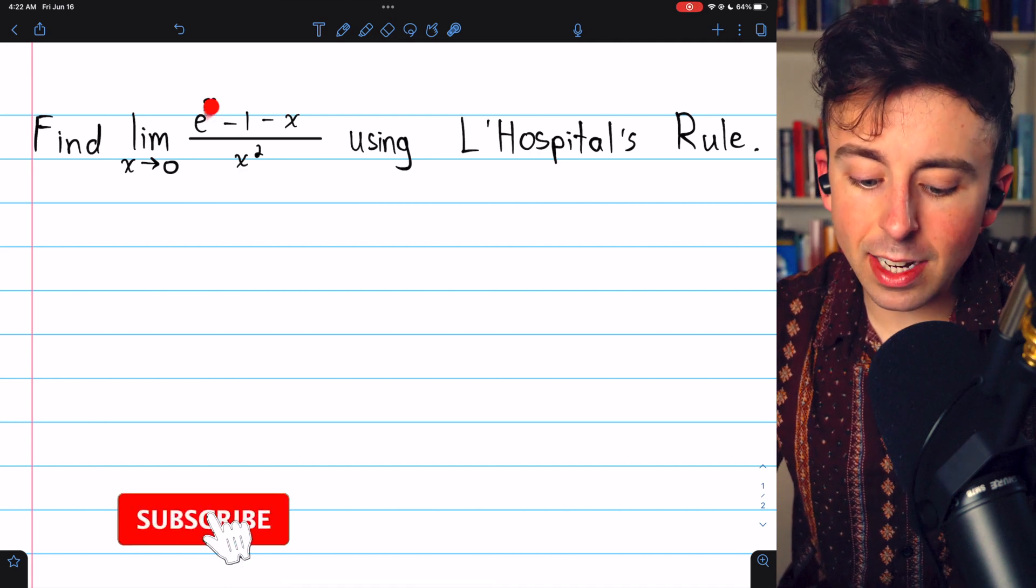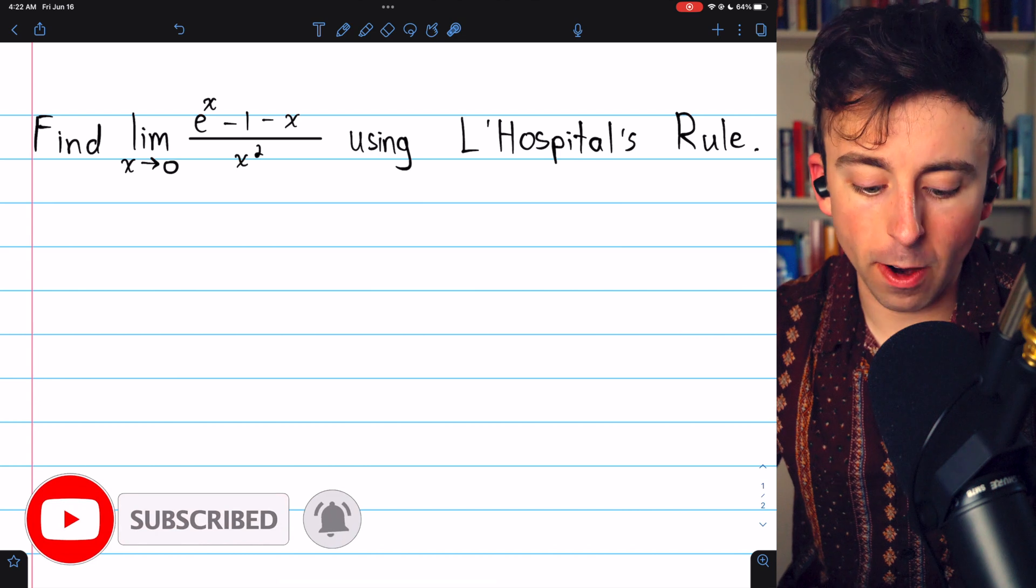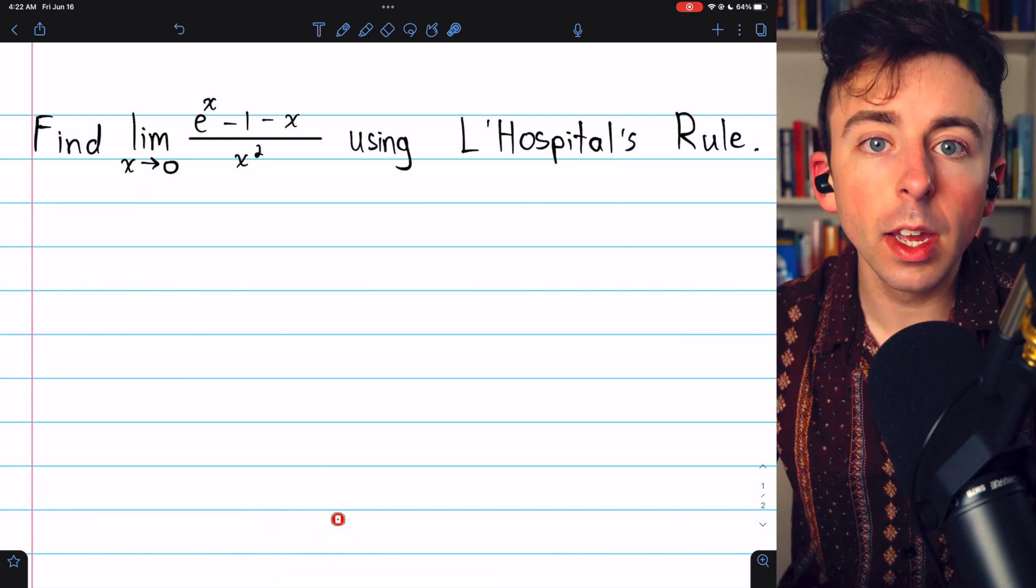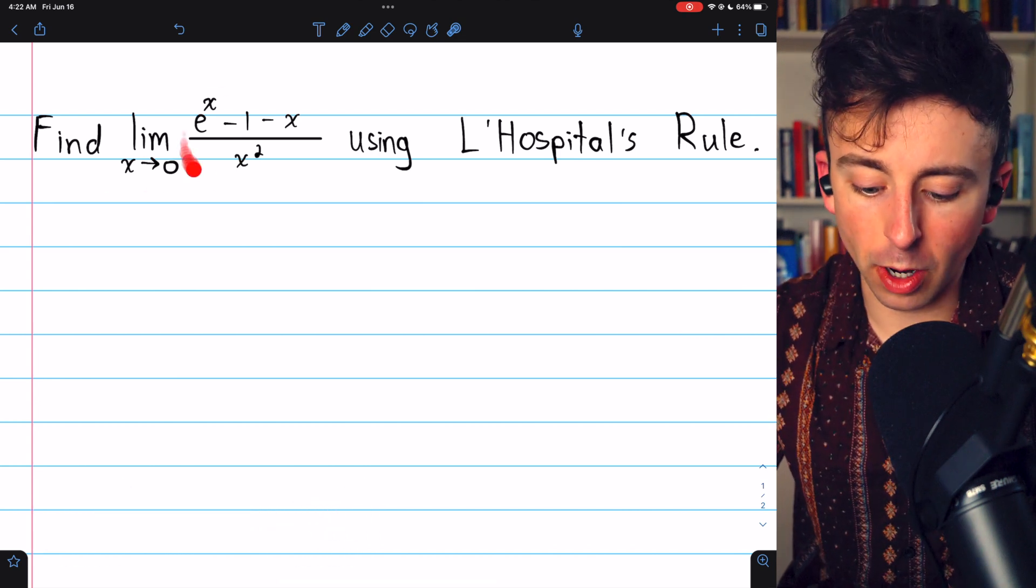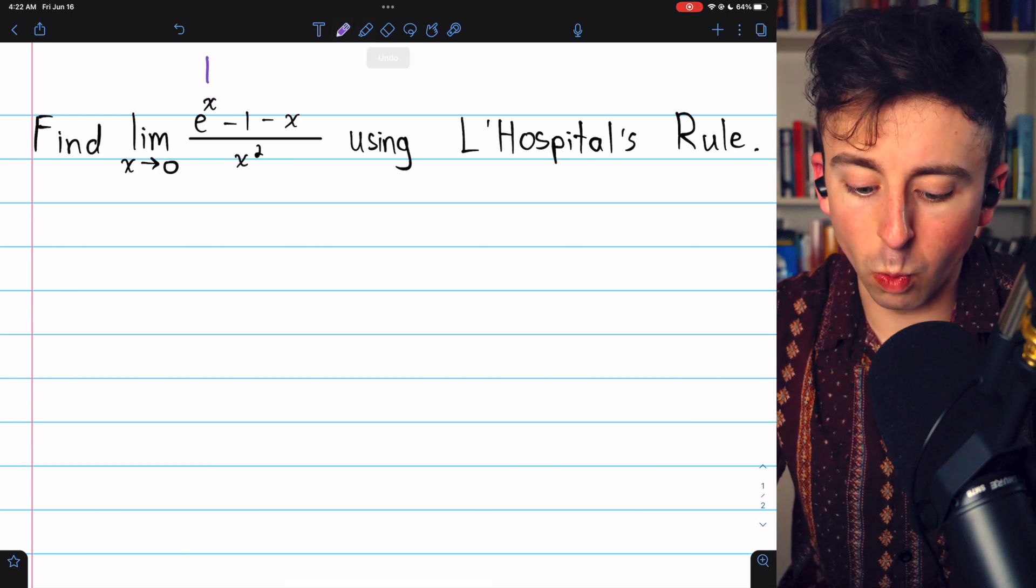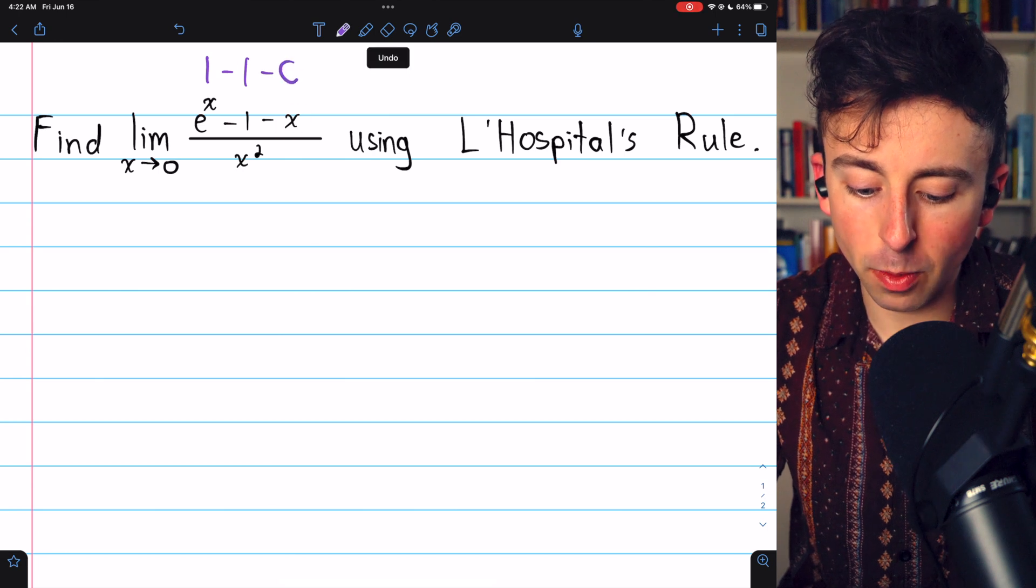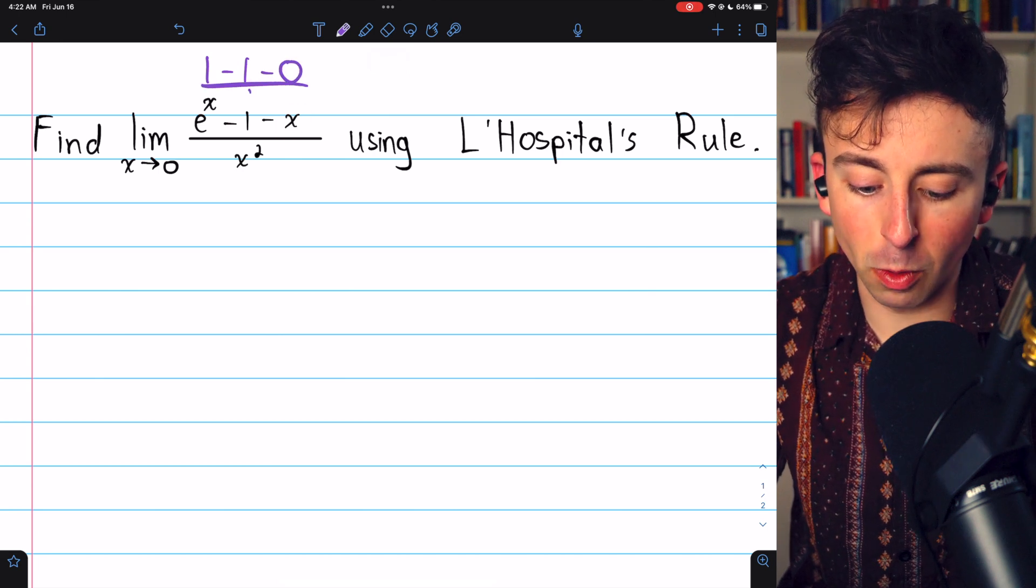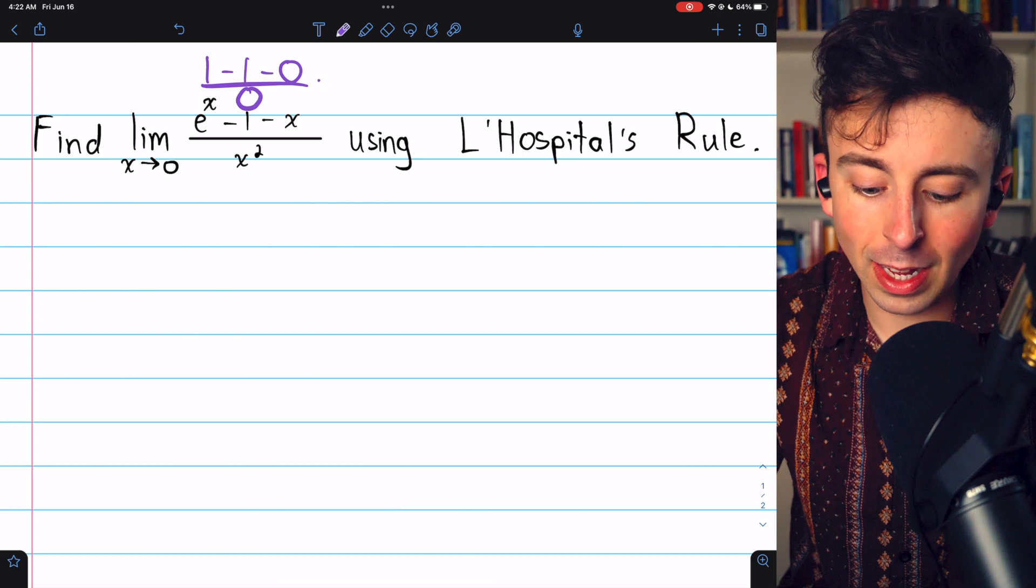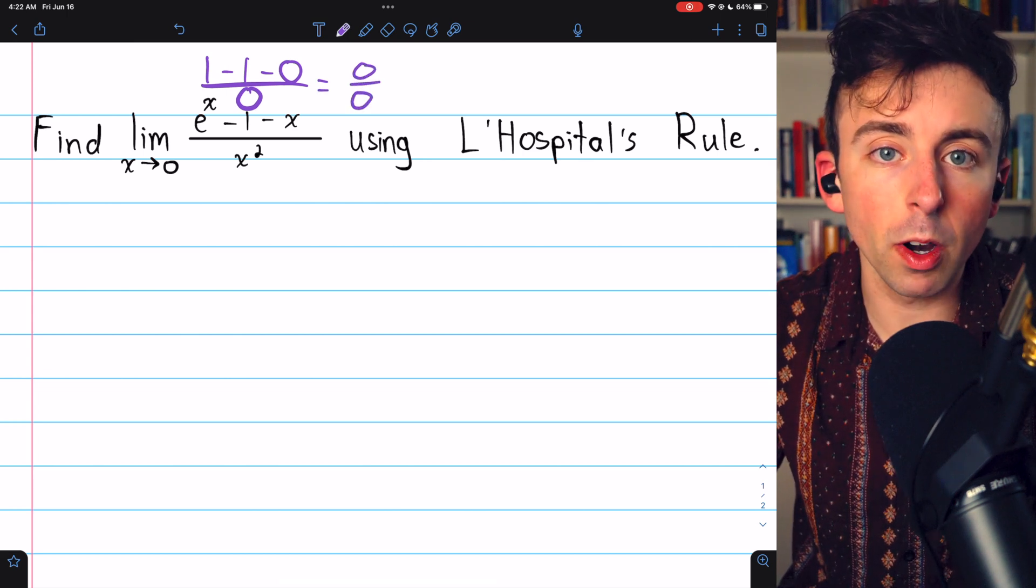Consider the limit of e to the x minus 1 minus x divided by x squared as x approaches 0. If we try to substitute 0 in for x, we're going to get e to the 0, which is 1, minus 1, minus 0, all divided by 0 squared, which is 0. Clearly, this is 0 over 0, which is an indeterminate form.